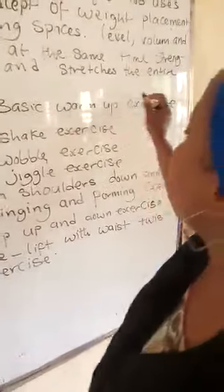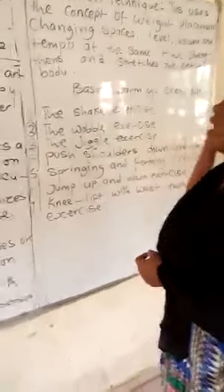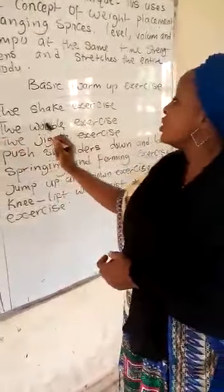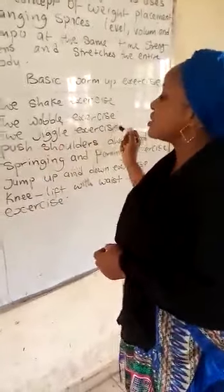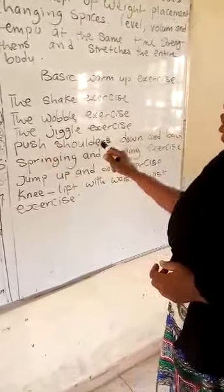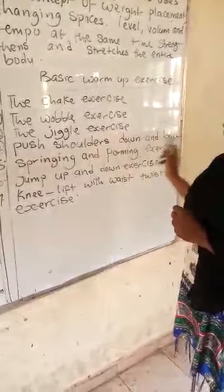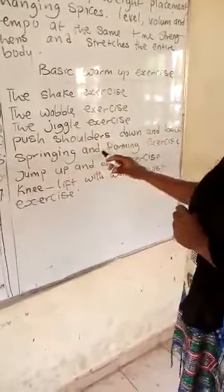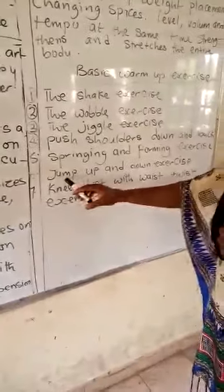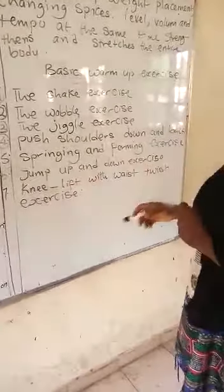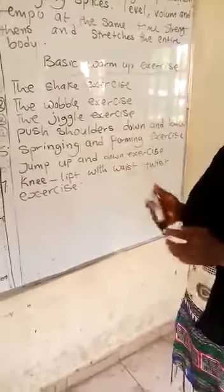Basic warm-up exercises recap: one, the shake exercise; two, the wobble exercise; three, the jiggle exercise; four, push shoulders down and back; five, springing and forming exercise; six, jump up and down exercise; seven, knee lift with waist twist exercise.